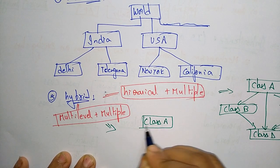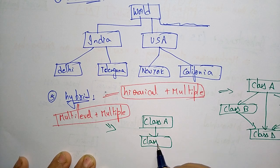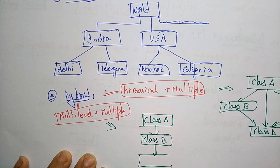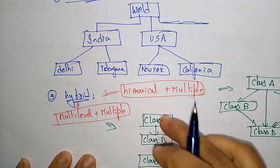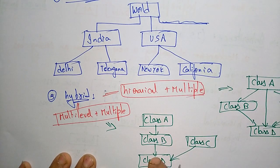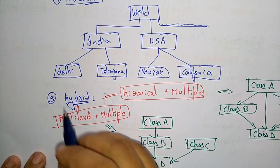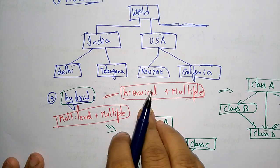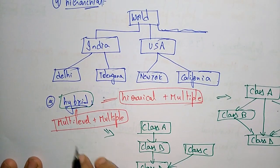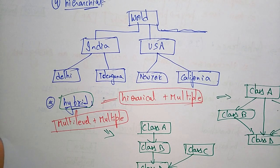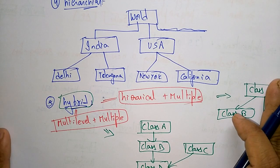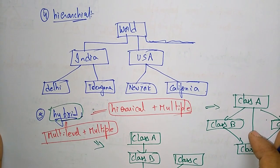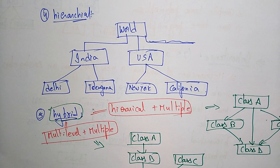For multi-level plus multiple: class A derives class B, class B derives class C, and class C along with another class derives class D — this is the multiple part. So hybrid inheritance is the combination of hierarchical plus multiple and multi-level plus multiple. These are the different types of inheritance used while writing programs.